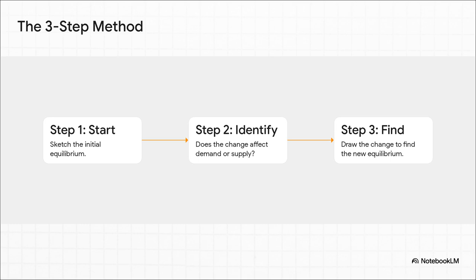First, we just draw a picture of the starting point, the before snapshot. Second, we have to figure out who the event really impacts. Is it the people buying or the people selling? And third, we just draw that change to see the final result.